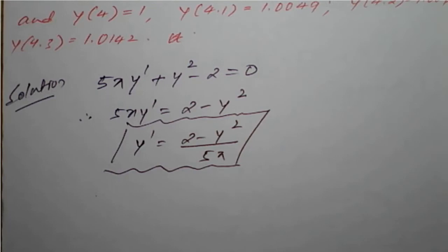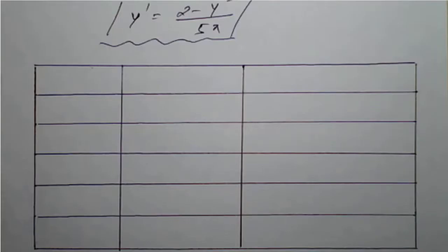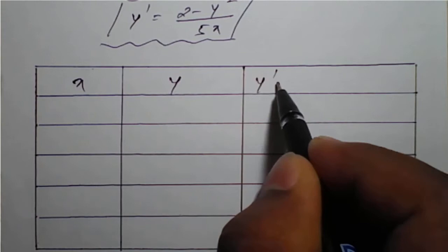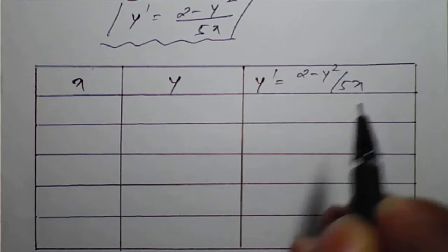Now, with the help of this y dash formula, from the table we have the values: y(4) equal to 1, y(4.1) equal to 1.0049, and so on. We will prepare a table and with the help of that table find the values of y dash, then apply the Adams-Bashforth formula.